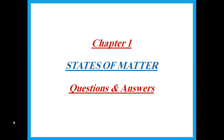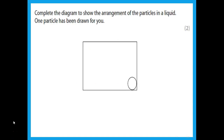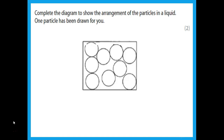The first question asks you to complete the diagram showing the arrangement of particles in a liquid. You should be able to draw circles that are touching, somewhere near each other in clusters — that is what we said about a liquid. Your diagram should look something like this.